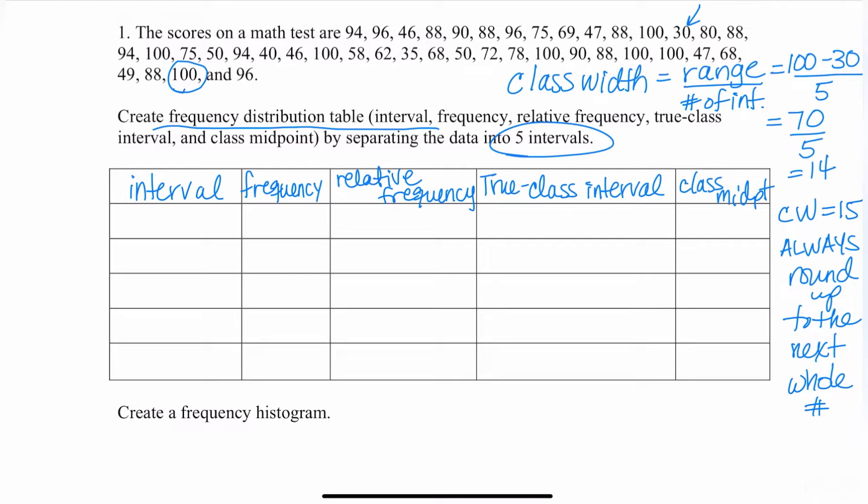Now that I figured out the class width is 15, my interval is going to start with the lowest number, 30. In order to include 15 numbers, including 15 numbers is the same as adding by 14. So here it's going to go from 30 to 44. And if you don't believe me, take your fingers and start counting: 30, 31, 32, 33, 34, 35, 36, 37, 38, 39, 40, 41, 42, 43, 44. That includes 15 numbers.